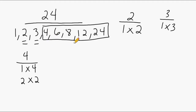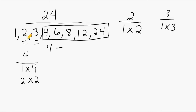Now all of these composite factors can actually be produced by a combination of multiplying the prime factors. For example, let's take a look at the number 4. To produce 4, we can multiply the prime number 2 by itself. So 2 times 2 makes 4.